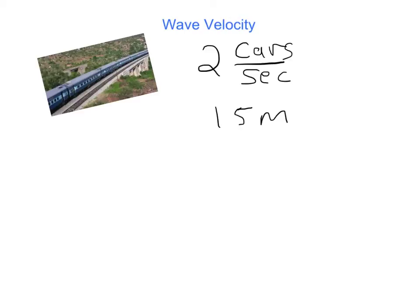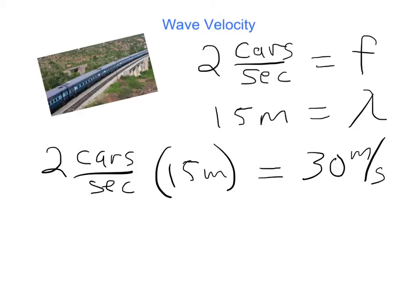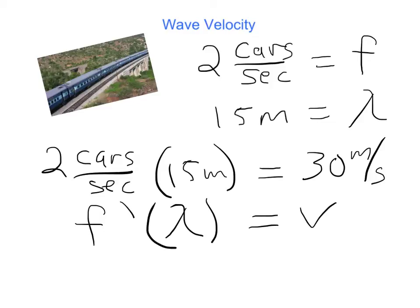Now let's transfer these terms into wave terms. If two cars are going by every second, that's just like the frequency of a wave — the number of waves per second. If each car is 15 meters long, that's like the wavelength. Just like I multiplied two cars per second times 15 meters to get 30 meters per second for the train's speed, frequency times wavelength equals the speed of a wave.